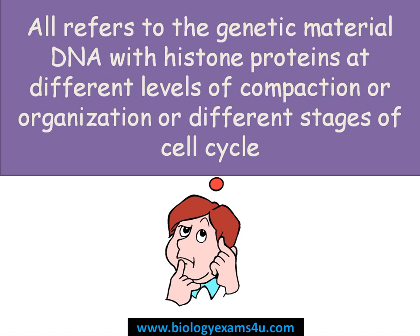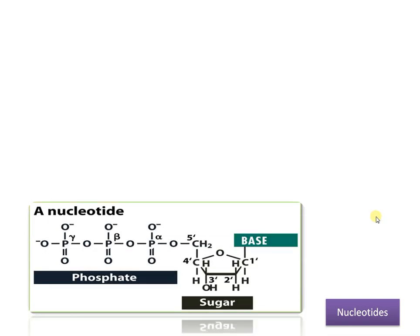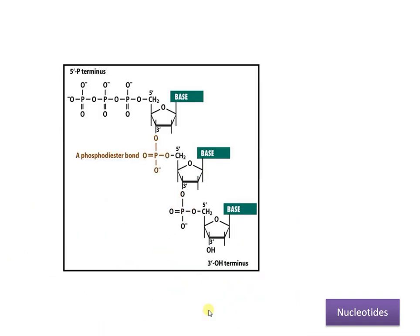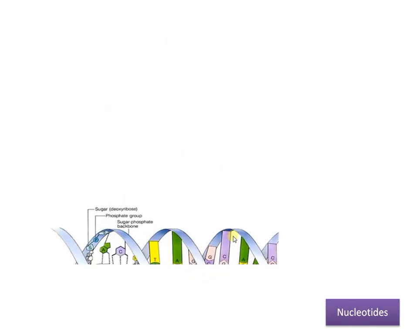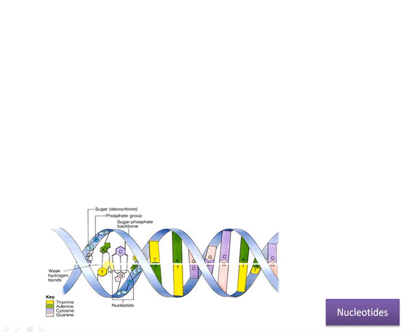Now moving into the detail — as you all know, DNA is made up of nucleotides. Nucleotides are the building blocks of the DNA molecule. A nucleotide consists of a sugar, a nitrogenous base, and a phosphate group. These nucleotides are joined to form a DNA strand by the formation of phosphodiester bonds between the nucleotides. That is how we get a single-stranded DNA molecule.